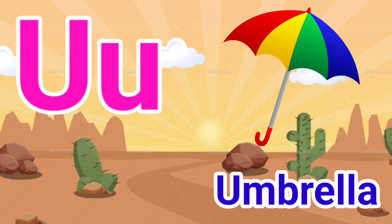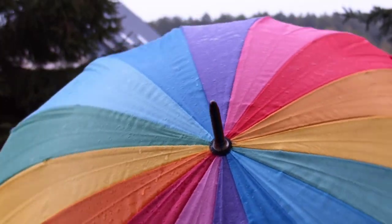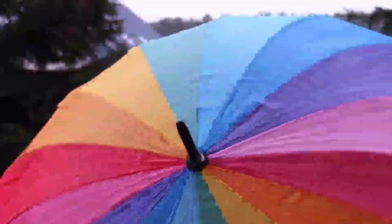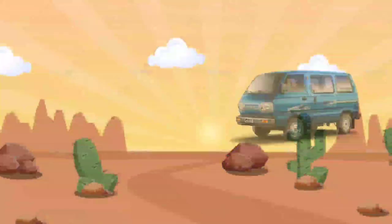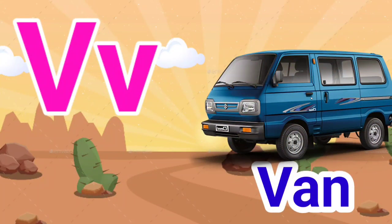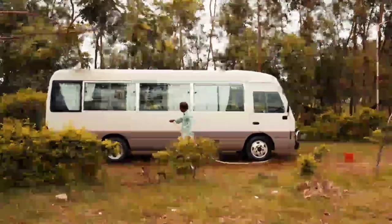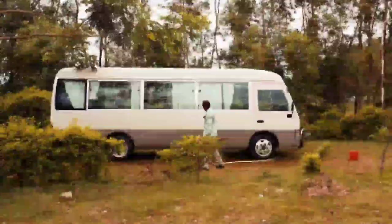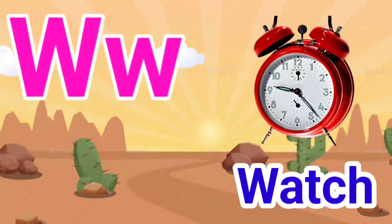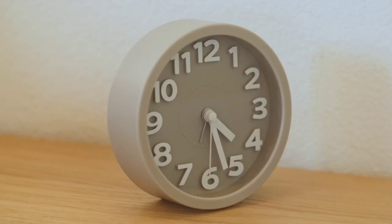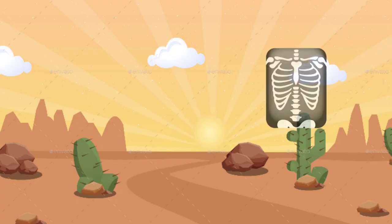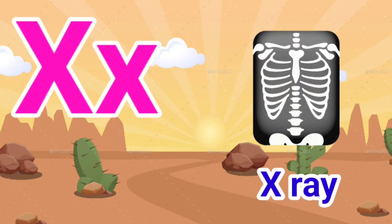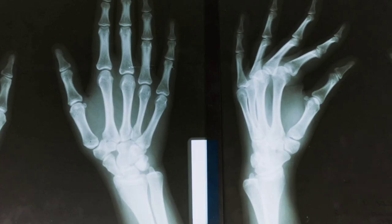U for Umbrella, V for Wind, W for Watch, X for X-Ray.